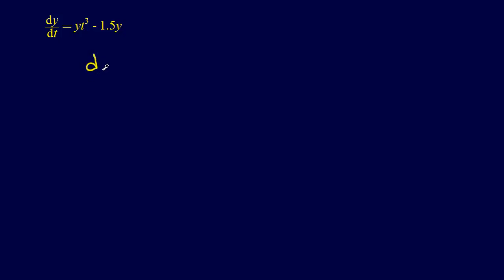So dy, the first thing we're going to do is recognize that we can factor a y out of here. So dy dt equals y times t cubed minus 1.5, and if we distribute the y, it'll be the same thing.